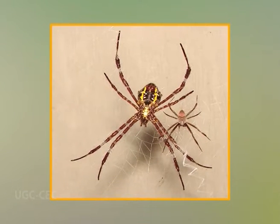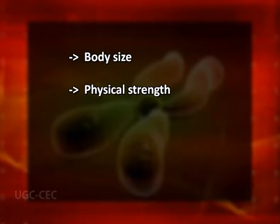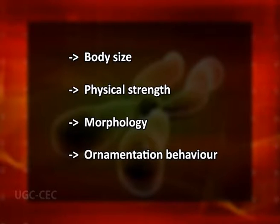Now, coming to sexual dimorphism. Sexual dimorphism is a phenotypic differentiation between males and females of the same species. This differentiation happens in organisms that reproduce through sexual reproduction, with the prototypical example being differences in characteristics of reproductive organs. Other examples include secondary sex characteristics, body size, physical strength, morphology, ornamentation behavior, and other bodily traits. Traits such as ornamentation and breeding behavior found in only one sex imply that sexual selection over an extended period of time leads to sexual dimorphism.